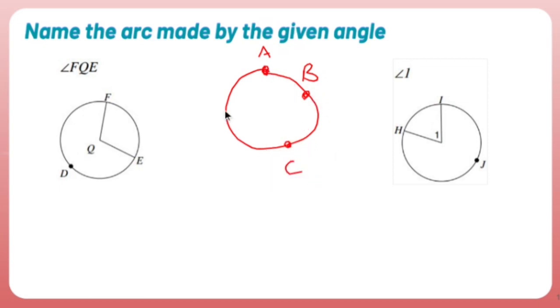But what if I add all these different letters and what if I want to be more specific? For example, if I were to say arc AC, which way am I going? Do I care about the right side, ABC, or ADC?